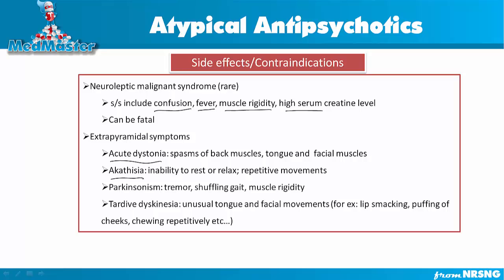The third extrapyramidal symptom is parkinsonism, which includes tremor, shuffling gait, and muscle rigidity — the same symptoms as Parkinson's disease. This makes sense because Parkinson's disease is caused by decreased dopamine levels, and this medication blocks dopamine in the brain, making patients more prone to Parkinson-like symptoms.